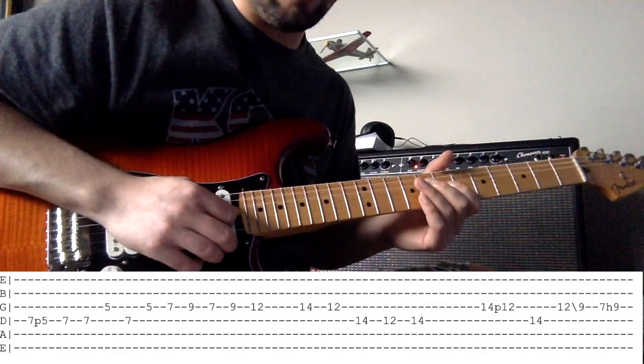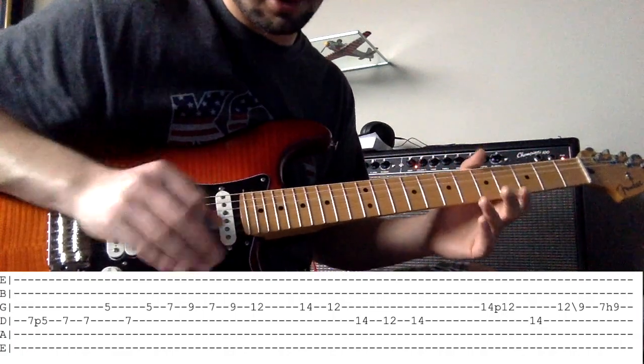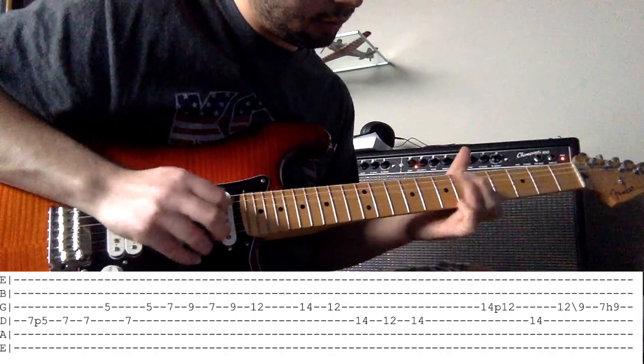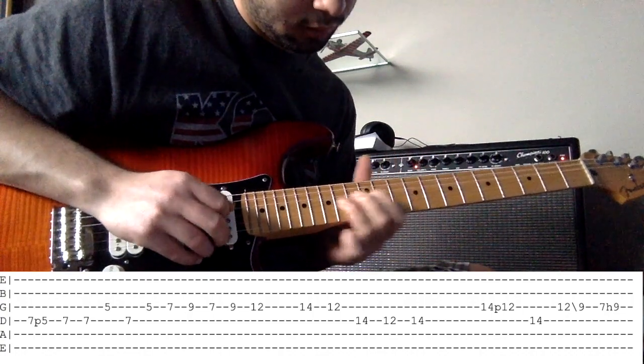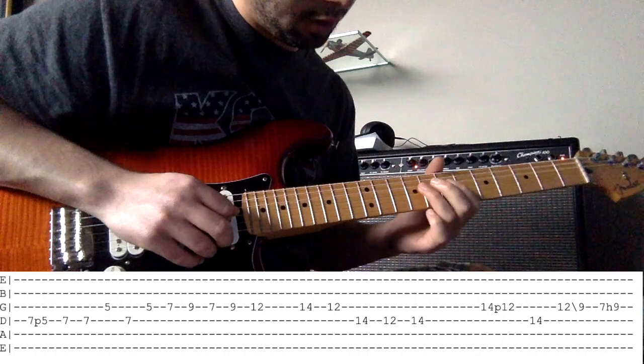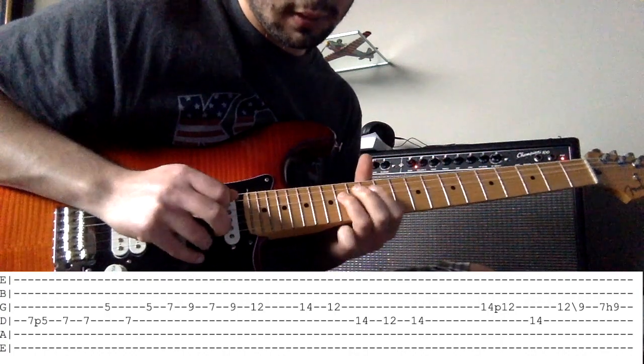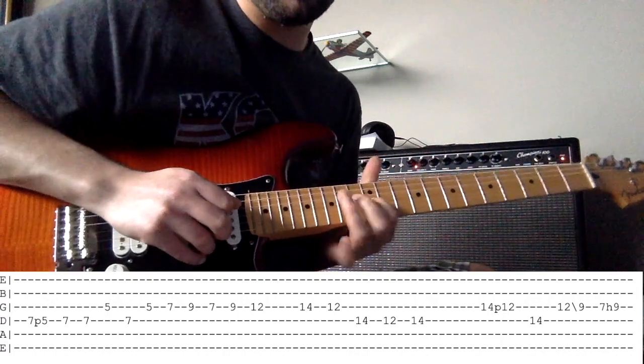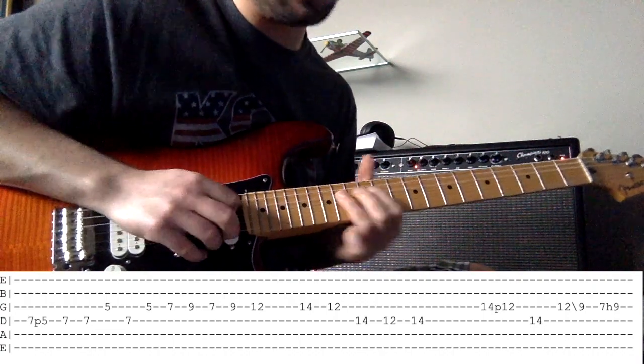But you see there, you're taking a brief break, slowing the tempo down. So 7, 9, 12, then that's 14, 12 on the G, and then 14, 12, 14 on the D.